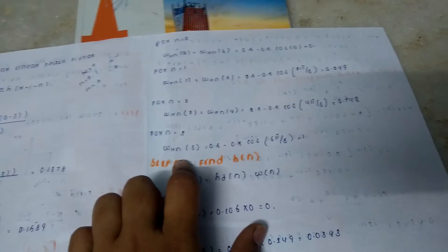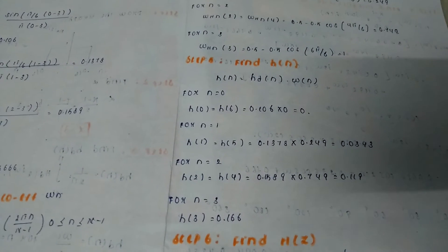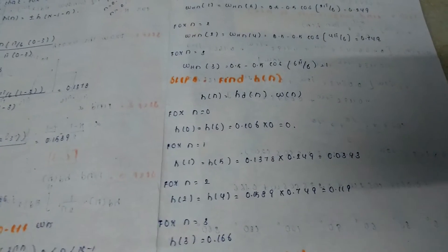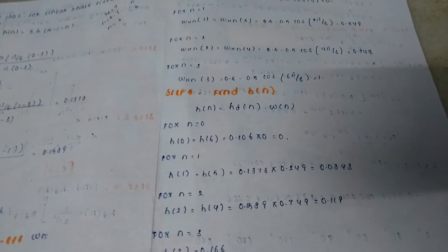Then step 5 is to find h(n), where h(n) formula is given as h_d(n) into ω(n). That is, you want to multiply your windowing coefficient and your filter response.